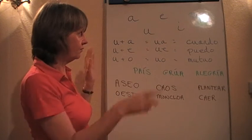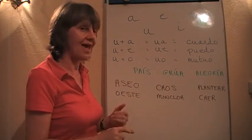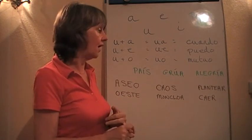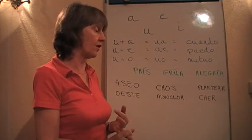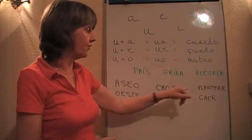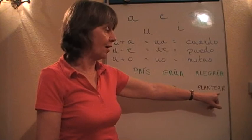And then we have the final permutation which is the e and a together and the two examples I've thought of are both verbs. One of them is plantear. Plantear.